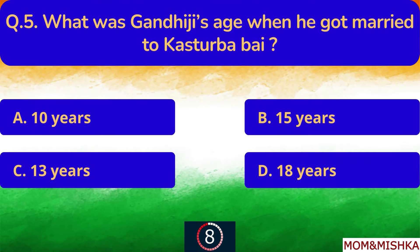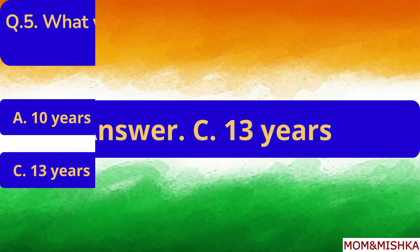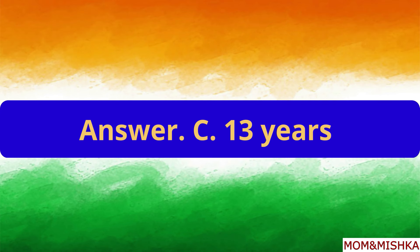What was Gandhiji's age when he got married to Kasturba? He was 13 years old. Option C.